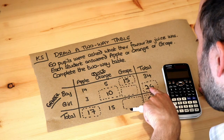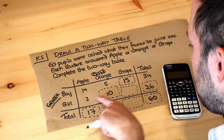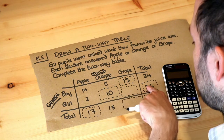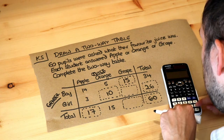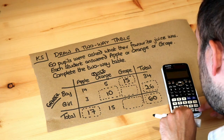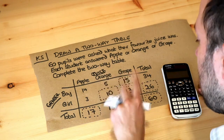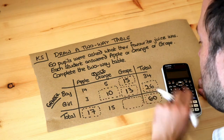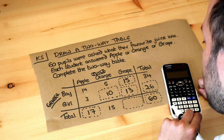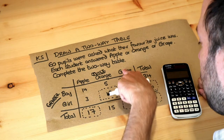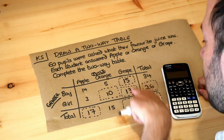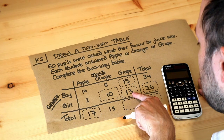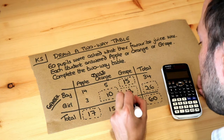Now we have the total number of girls, and we know the girls who liked apple or orange. So the girls who like grape — we just subtract those numbers from 26: 26 minus 3 minus 10 is 13. The total number of girls who liked any flavour adds up to 26 in that total column. Finally, for the total number of people who liked grape, we add the 15 boys and the 13 girls who liked grape, and those two numbers add up to 28.